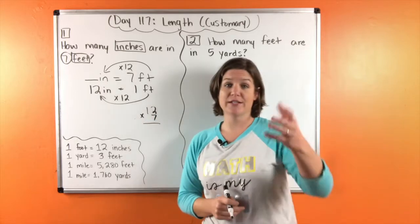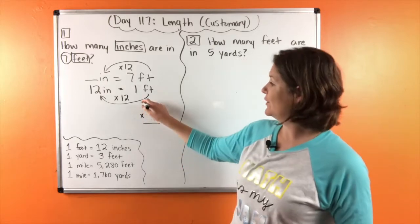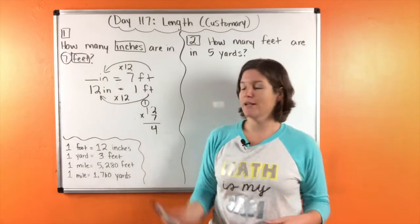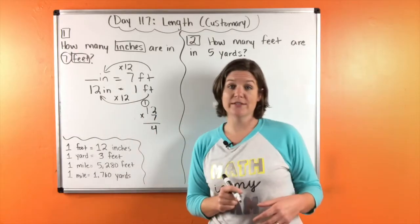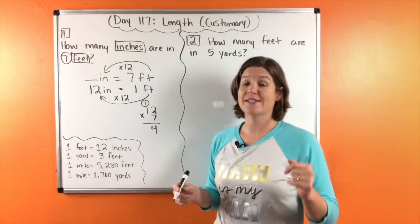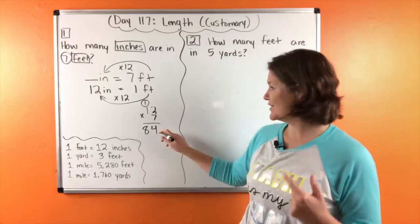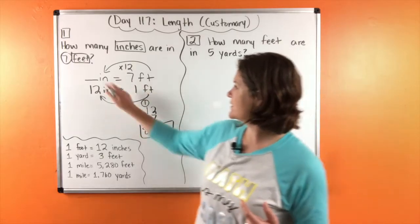So we have seven times 12. I'm going to write 12 times seven down here and let's solve that. Seven times two is 14. Seven times one is seven plus one is eight. So 84 inches, right? Inches is the answer.